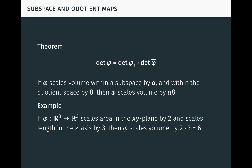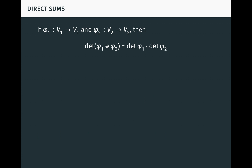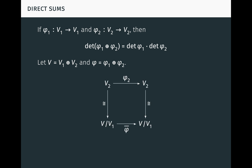As an example, in R3, if phi scales area within the xy-plane by 2 and scales length along the z-axis by 3, then phi scales volume by 6. It follows that if phi1 is a linear transformation of V1 and phi2 is a linear transformation of V2, then the determinant of the direct sum phi1 ⊕ phi2 equals the determinant of phi1 times the determinant of phi2. To see this, let V = V1 ⊕ V2 and phi = phi1 ⊕ phi2; the commuting square and previous theorem give the result.